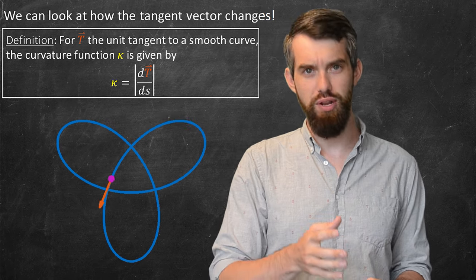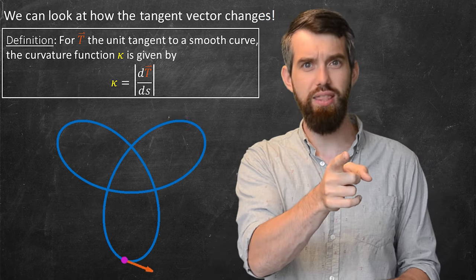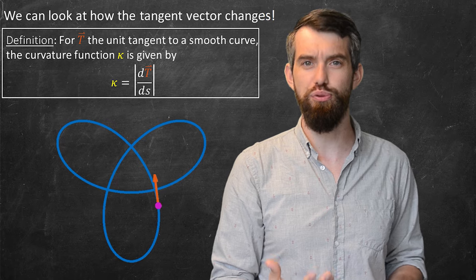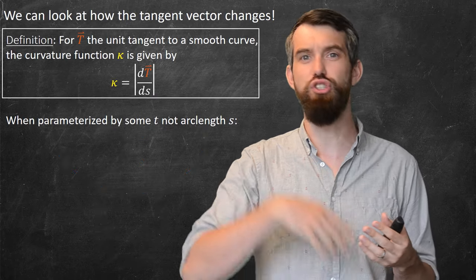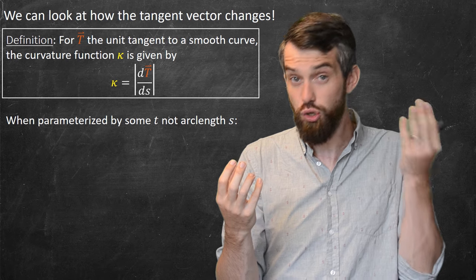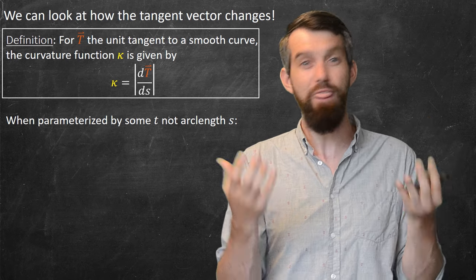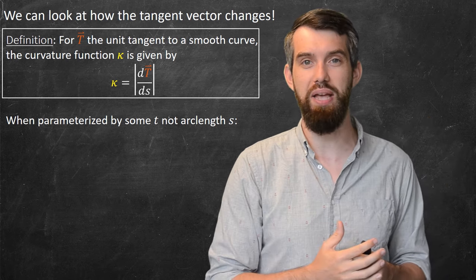One technical point here, notice it's the derivative with respect to arc length. Arc length is kind of a special parameter. If it wasn't arc length, if you had it parameterized by some generic t, opposed to the special case of parameterized by arc length, that's fine too, it's just a little bit more complicated in that case.